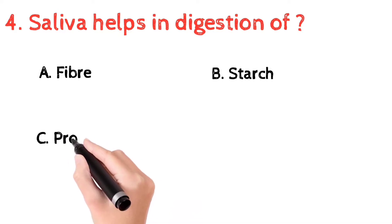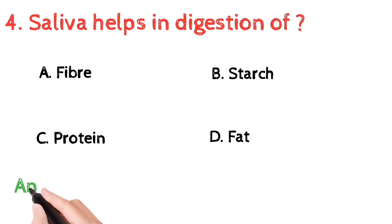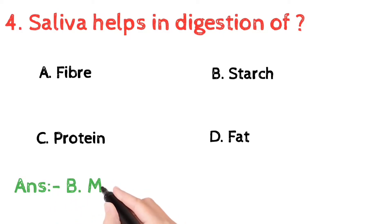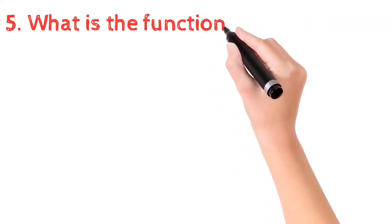Bile breaks down fat into fatty acids, which are further absorbed by the body. Question number 4: saliva helps in digestion of — a) fiber, b) starch, c) protein, d) fats. The correct answer is b) starch. Saliva contains the enzyme amylase, which breaks some starch down into maltose and dextrin, so digestion of food begins in the mouth before it reaches the stomach. Saliva does not digest protein, fats, or fiber.